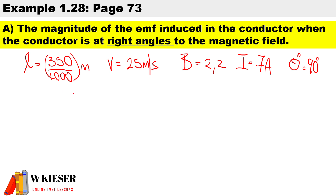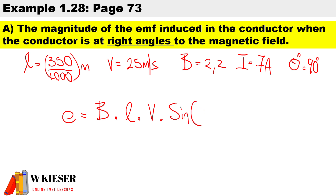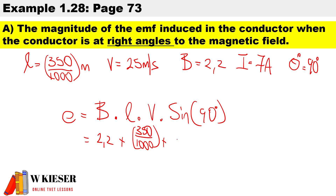To calculate the magnitude of the EMF we use: e = B × L × v × sinθ. Substituting the values: 2.2 × (350/1000) × 25 × sin90°. Since sine 90° equals 1, our instantaneous value works out to 19.25 volts. This instantaneous value equals the maximum value because sine 90° is equal to 1.